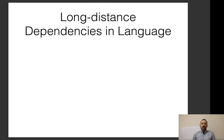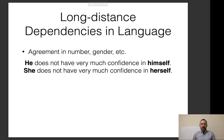Another thing to note about language is it has long-distance dependencies — for example, agreement in number or gender. There's not a huge amount of agreement in English, but here's an example: 'He does not have very much confidence in himself' versus 'she does not have very much confidence in herself.' And of course, there are other languages that have much richer notions of this sort of agreement.